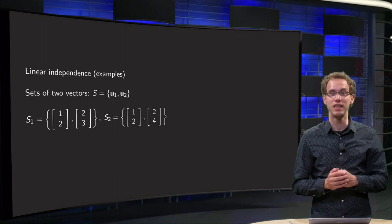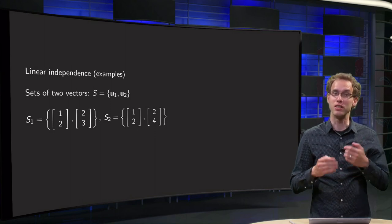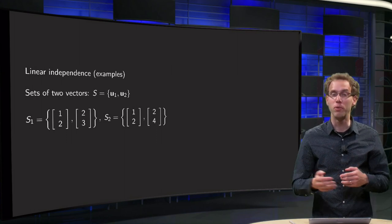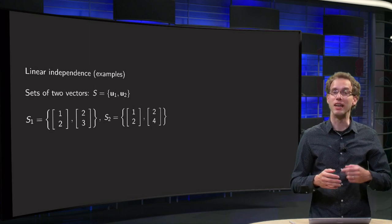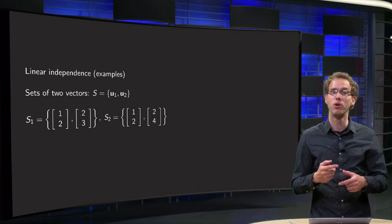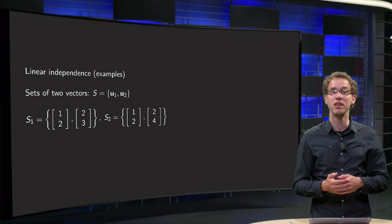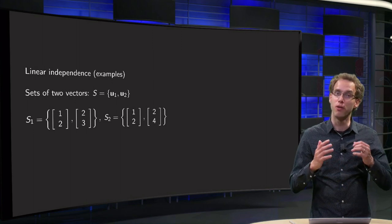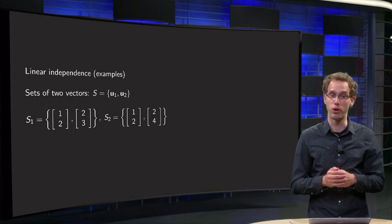The first case is if you have a set of only two vectors. The set is linearly dependent if one of the members is a linear combination of all the others. If you have only two members, that can only be the case if the first one and the second one are multiples of each other. So in a set of two vectors, you only have to look whether the vectors are multiples of each other or not.